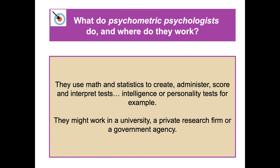Psychometric psychologists use math — they're the people more into research methods and statistics. They use their knowledge to create, administer, score, and interpret tests, such as intelligence or personality tests, which we'll be studying a lot within this course. They might work in university settings, private research firms, or government agencies, or for private companies like the College Board, Kaplan, or the Princeton Review. If you have a lot of knowledge in psychometrics, you can have a lot of job options.